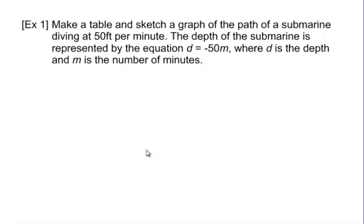Make a table and sketch a graph of the path of a submarine diving at 50 feet per minute. The depth of the submarine is represented by the equation d equals negative 50m. Make sure you write that down. Where d is the depth and m is the number of minutes.